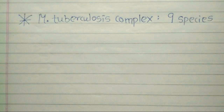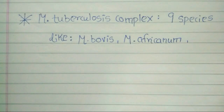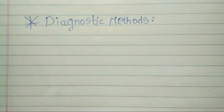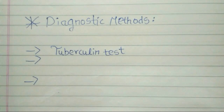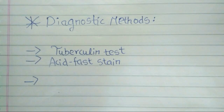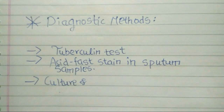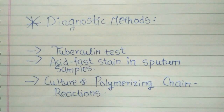M. tuberculosis is part of a complex that has at least 9 species, such as M. bovis, M. africanum, M. microti, etc. The most frequently used diagnostic methods for tuberculosis are the tuberculin skin test or Mantoux test, acid-fast stain, culture, and polymerase chain reaction. M. tuberculosis is characterized in tissue by caseating granulomas.